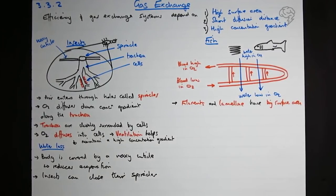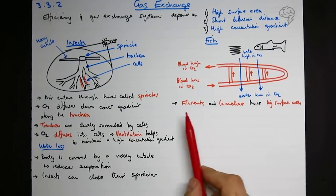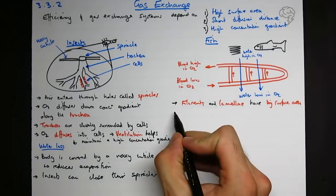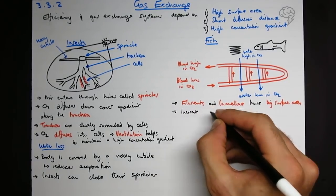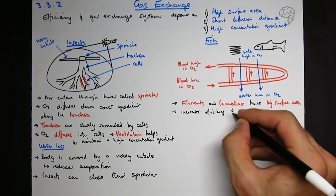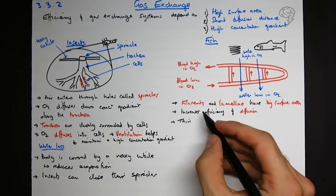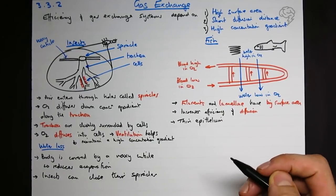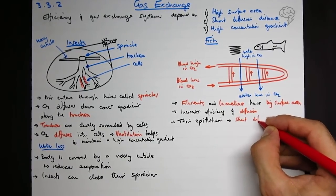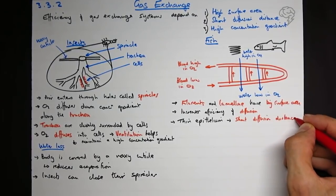So filaments and lamellae, which are the names for these things - lamellae means layers, this is plural. Filaments and lamellae have a large surface area, which increases the efficiency of diffusion. They have a thin epithelium, which means layer. The cells making up the wall, the barrier, are very thin. And what does that mean? You have a short diffusion distance.